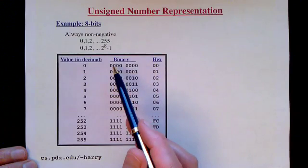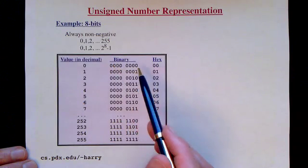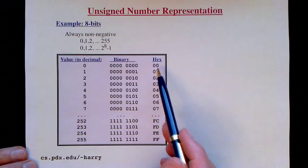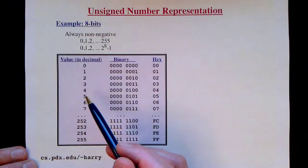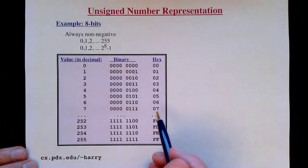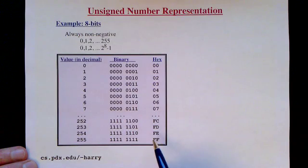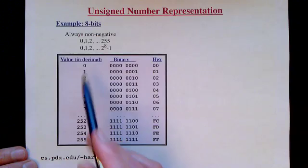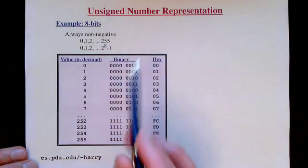The bits are shown in binary notation, and since there's a one-to-one correspondence with hex, each byte is also shown with two hex digits. Hex 00 corresponds to the value zero, 05 corresponds to five, 0A corresponds to ten, and so on, all the way up to FF which corresponds to 255. So with one byte we can represent any number between zero and 255 using the unsigned number representation.